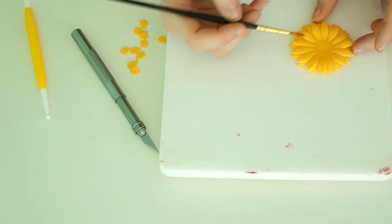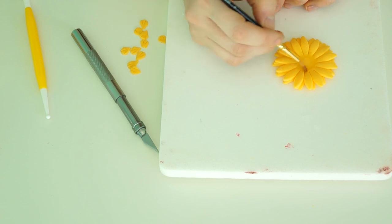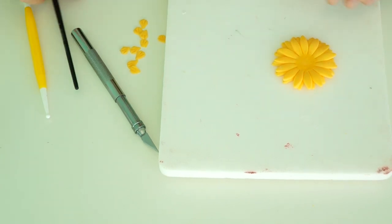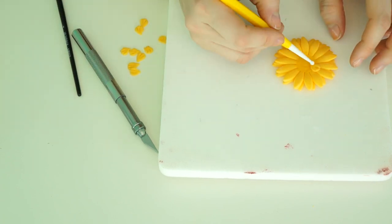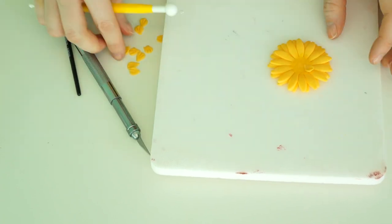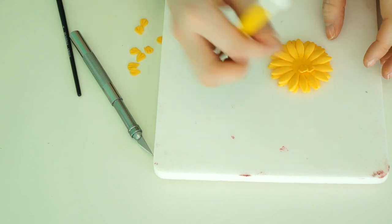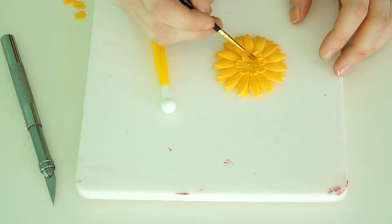Just place some edible glue around the center of the flower, and then taking these I'm just going to place these on and push them into place.